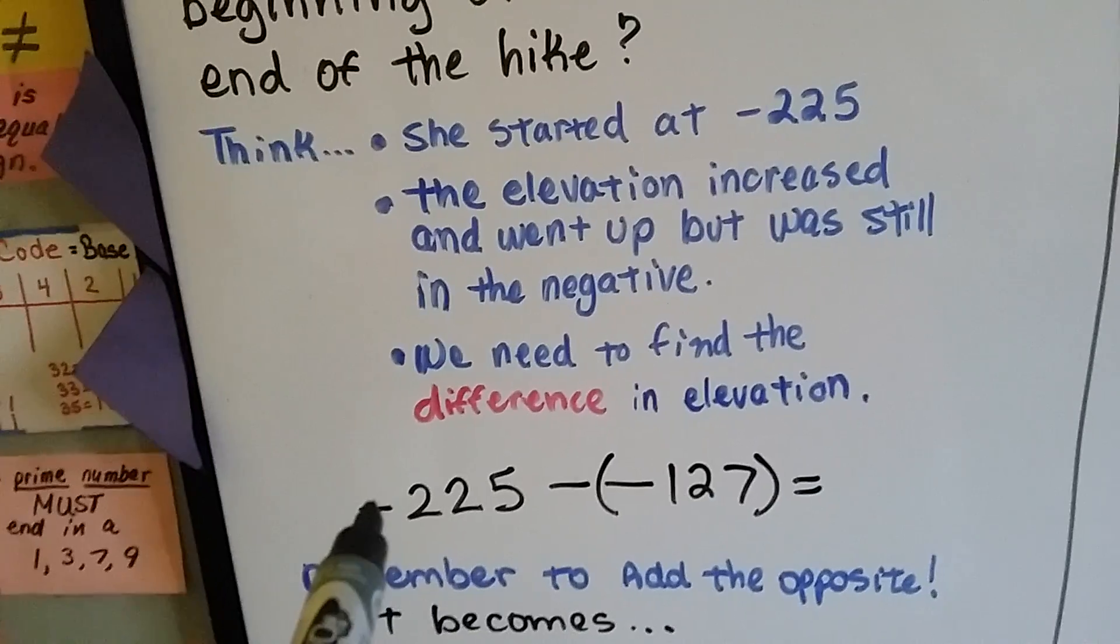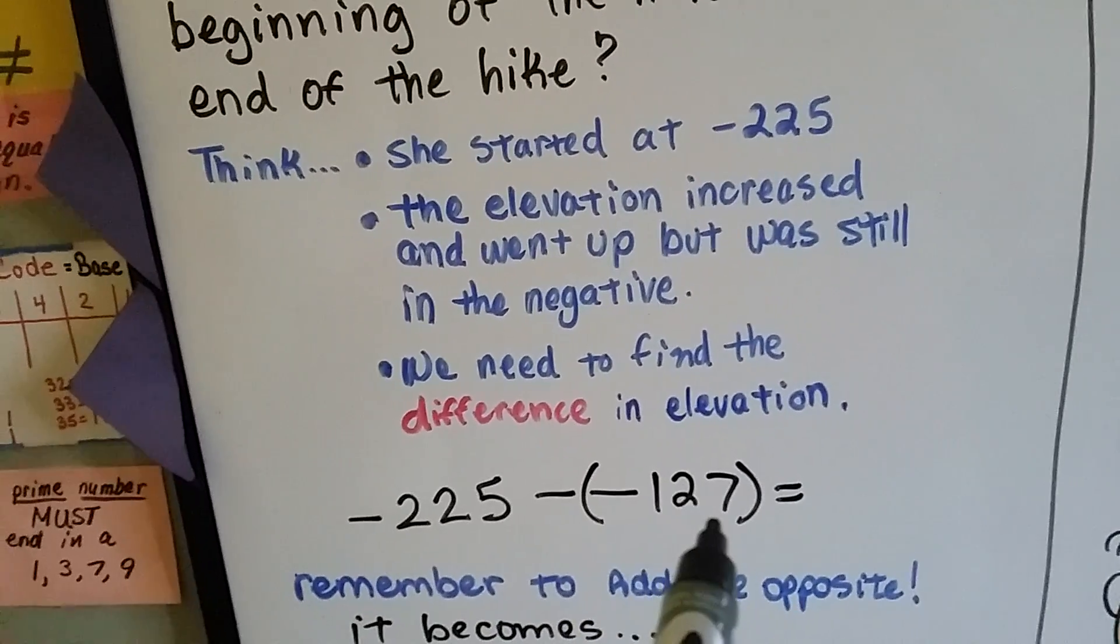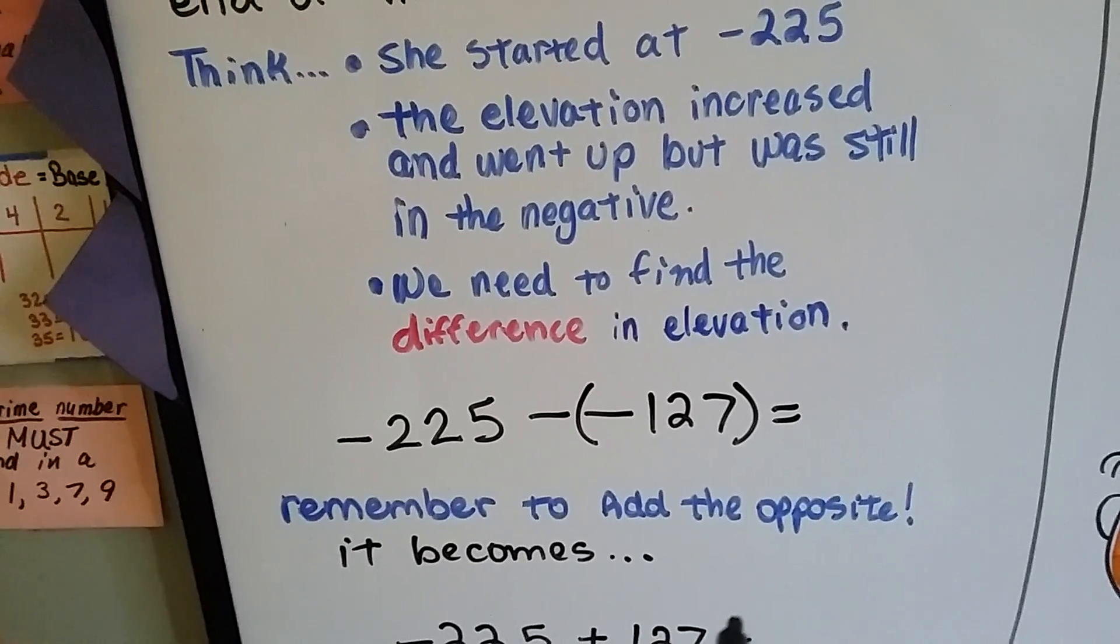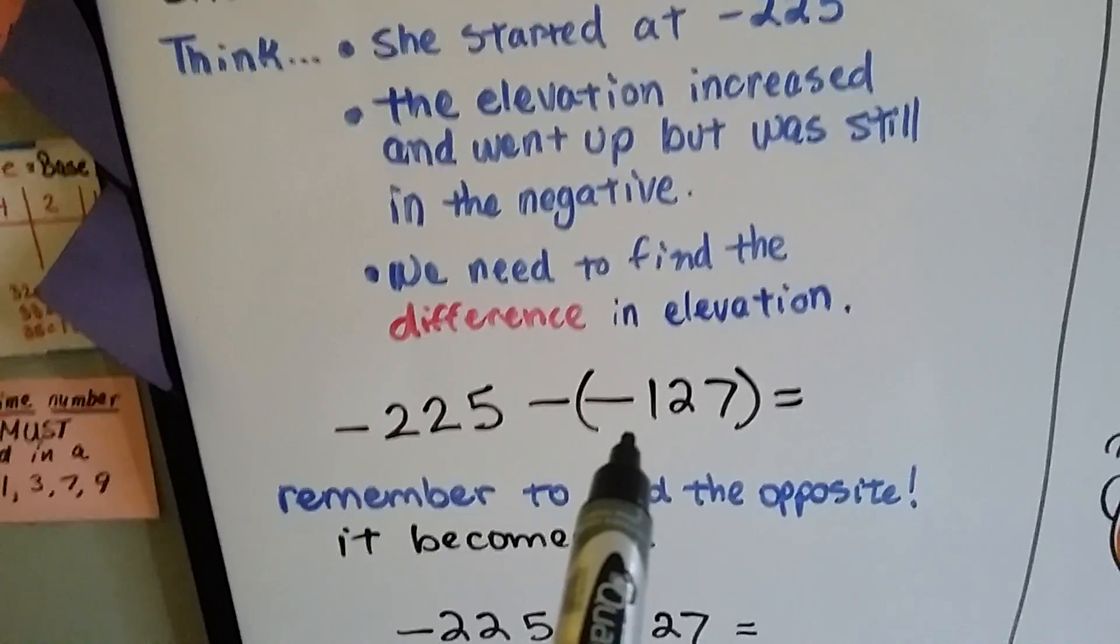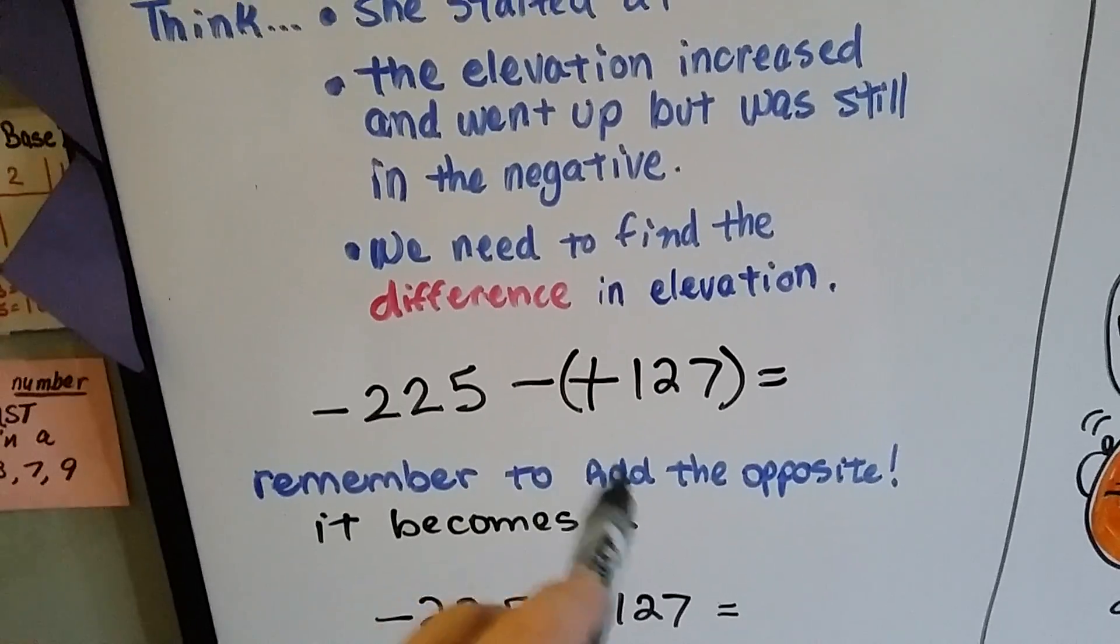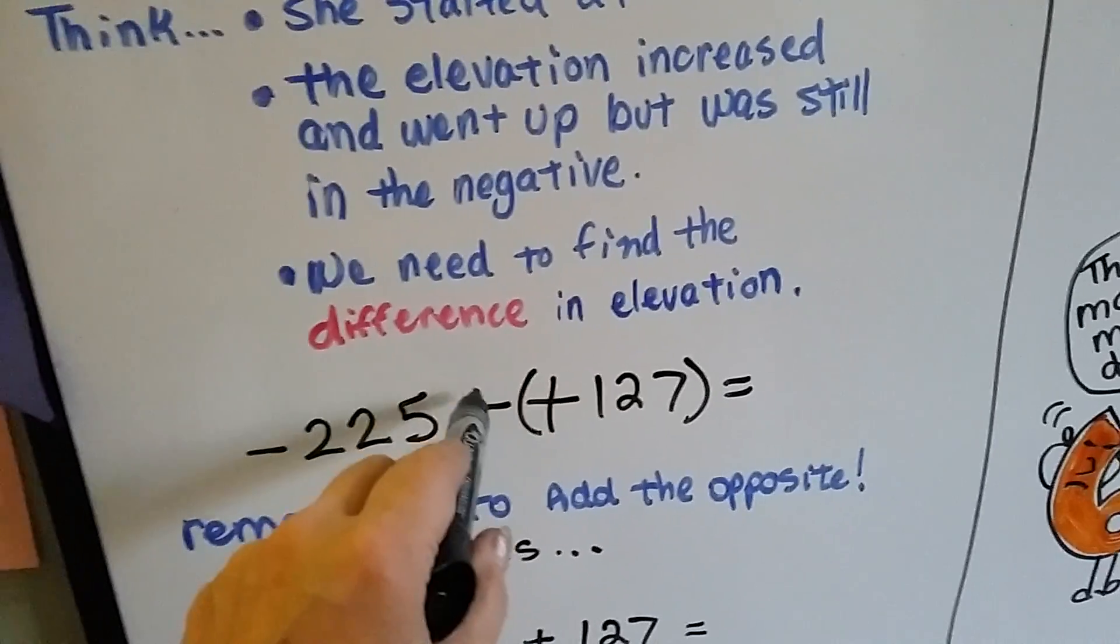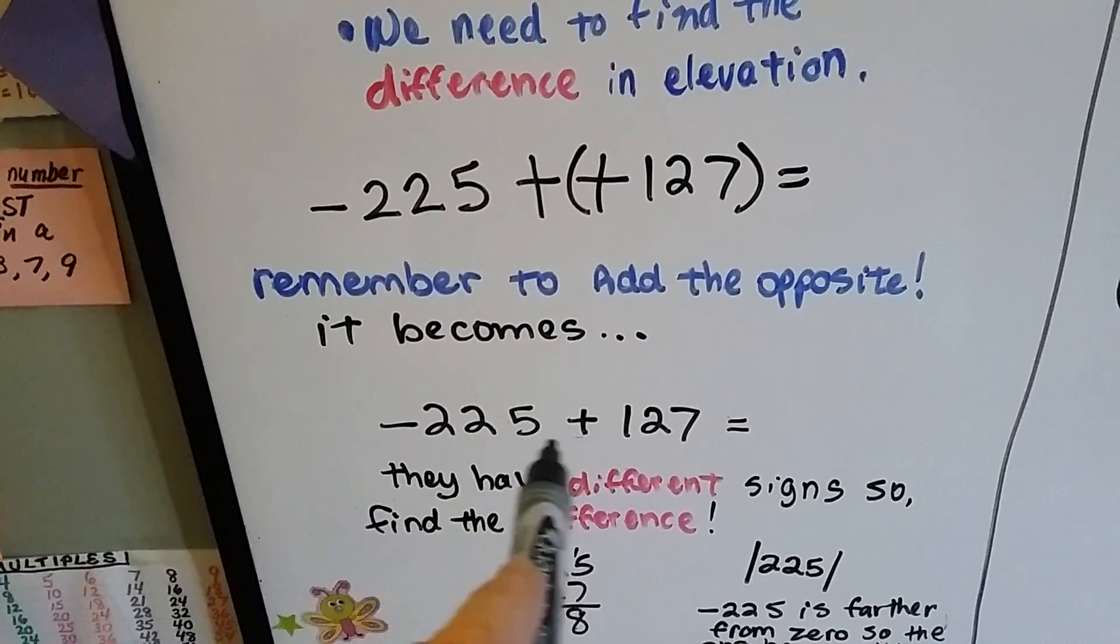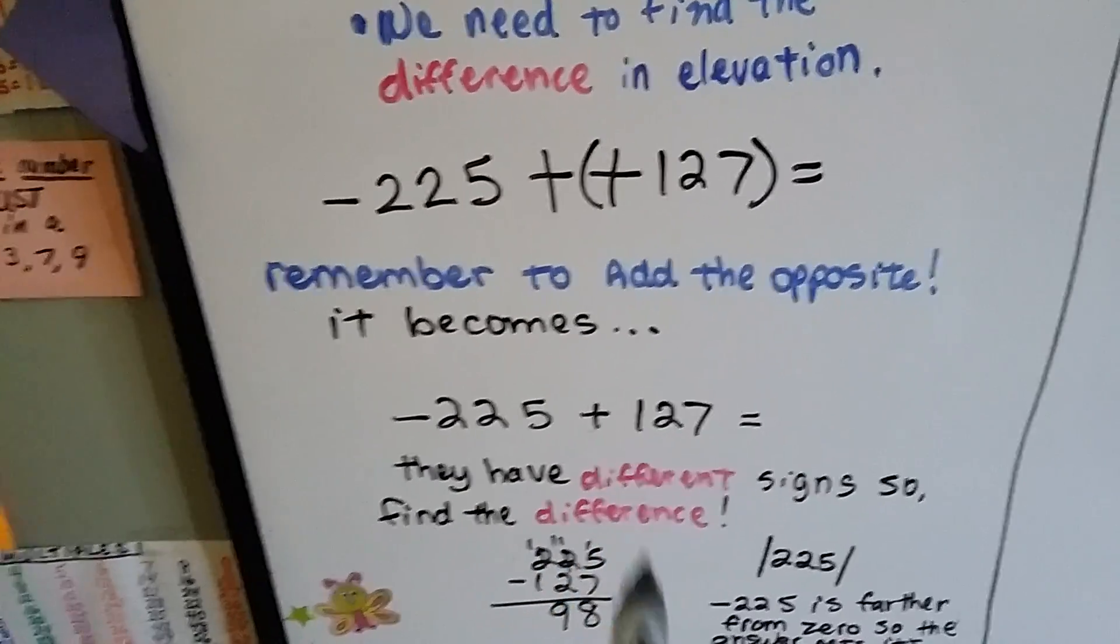And we've got negative 225, and we're going to take away the negative 127. But remember, we add the opposite. So, the negative 127 becomes a positive 127, and we add the opposite. So this minus sign becomes a plus sign.